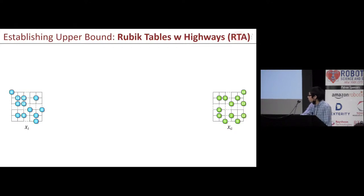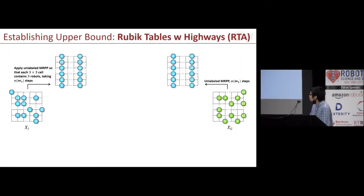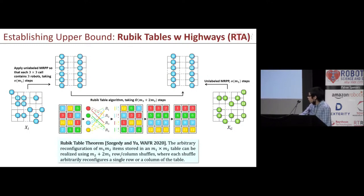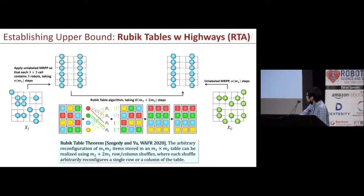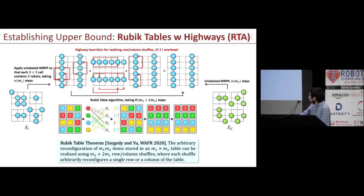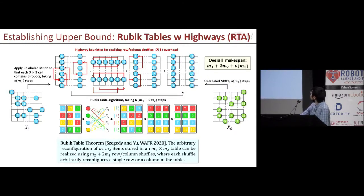To go from XR to XG, we first apply unlabeled MRPP algorithms to both XR and XG so that each 3×3 cell has exactly 3 robots in it. Then, to achieve reconfiguration of the augmented start and goal configurations, we apply a novel Logic Table algorithm: any reconfiguration of M1×M2 atoms in an M1 by M2 table can be realized using M2 + 2M1 row or column shuffles, where each shuffle can arbitrarily reconfigure a single row or column. We then apply a highway heuristic for realizing the row or column shuffles, which is possible at one-third robot density. Overall, the makespan is M1 + 2M2.